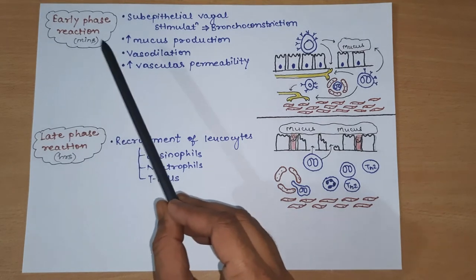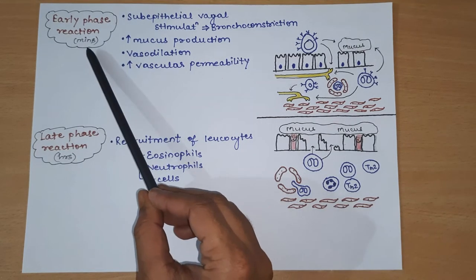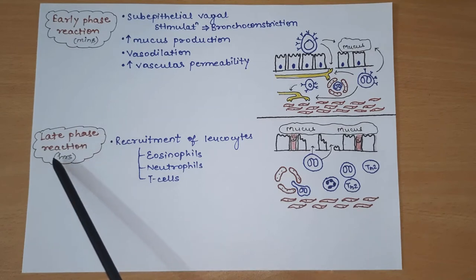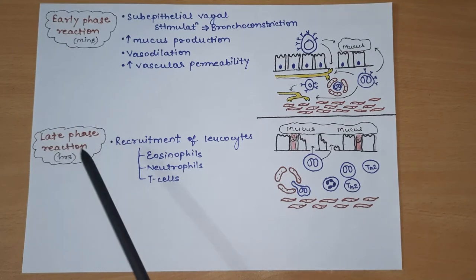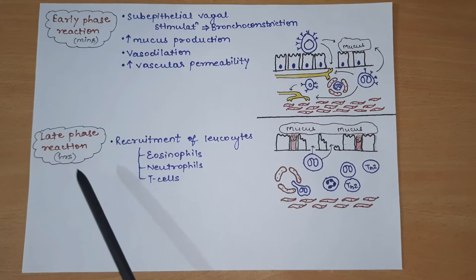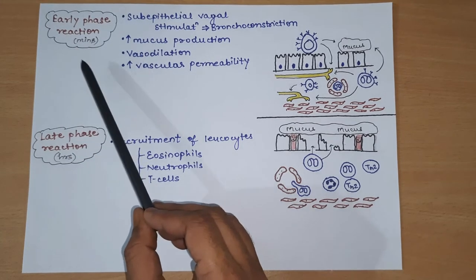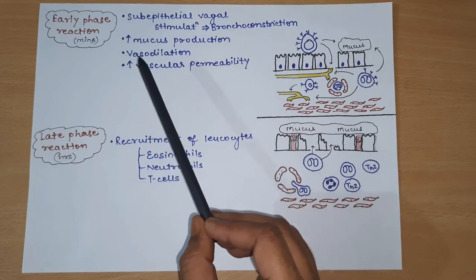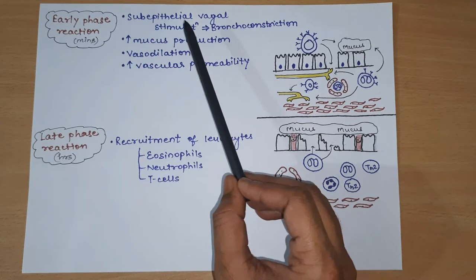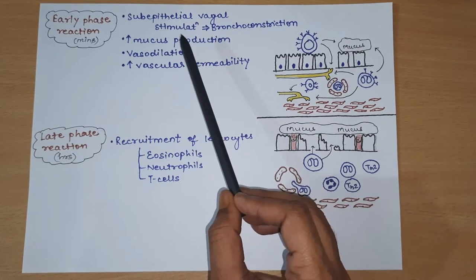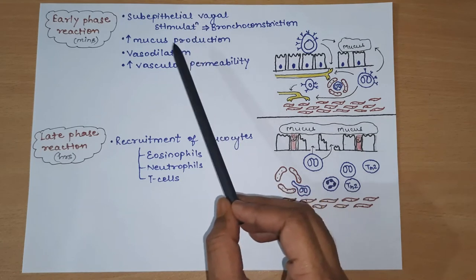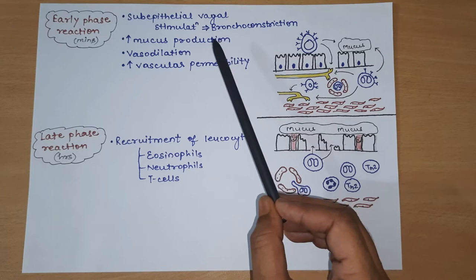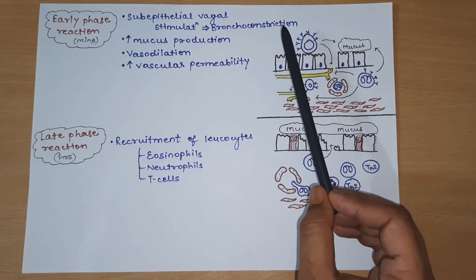The early phase reaction is seen within the starting minutes after degranulation, while the late phase reaction is seen hours after degranulation. In the early phase reaction, the mediators released from mast cells and eosinophils first stimulate subepithelial vagal nerve endings. Because the vagus nerve is a parasympathetic nerve that causes smooth muscle contraction, this ultimately leads to bronchoconstriction.